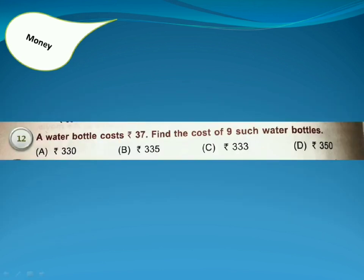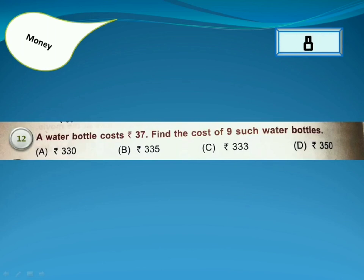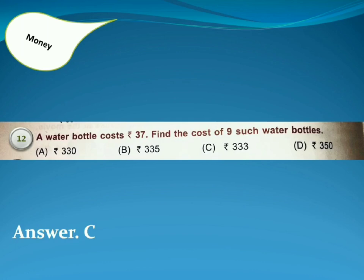A water bottle costs 37 rupees. Find the cost of 9 such water bottles. Answer is Option C, because 37 into 9 is equal to 333.